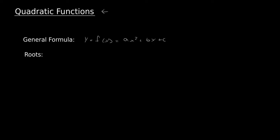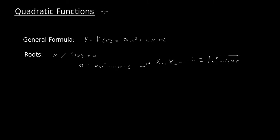The roots of a quadratic function are those numbers x for which f of x equals 0. So 0 equals ax squared plus bx plus c. And then we can use the well-known formula to find x1 and x2. This formula is: minus b plus or minus the square root of b squared minus 4ac, all divided by 2 times a.